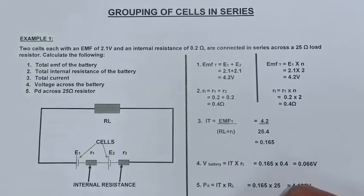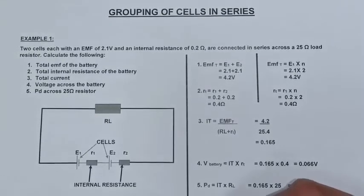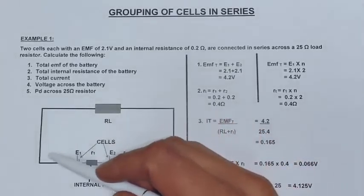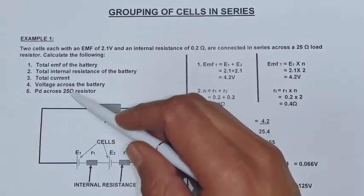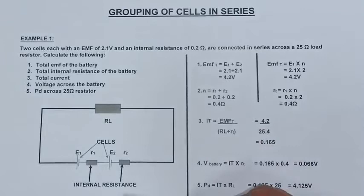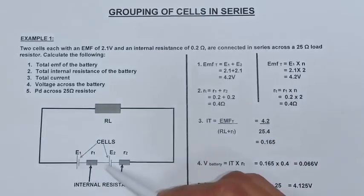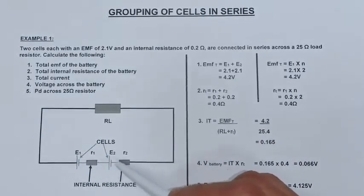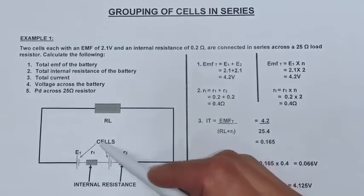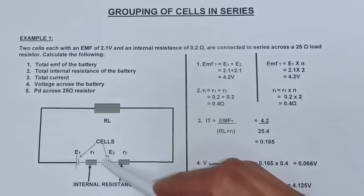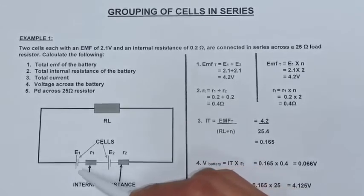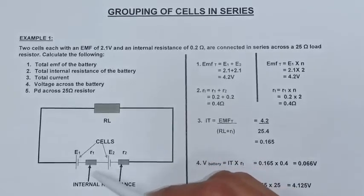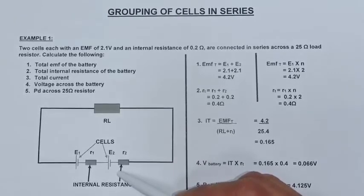So let's go to my first example of grouping of cells in series. Before we go to the example let's just look at the circuit. Here we have a simple series circuit with my load resistor, which is the 25 ohm resistor. We also have different cells: E1 and E2, and R1 and R2, which is basically a battery. This exists inside of the battery — we have taken that out to do the calculations on the EMF and the internal resistance inside of the battery.